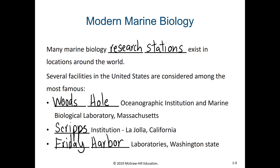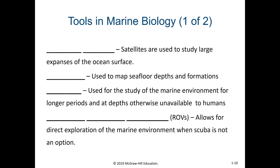Since observation is so important in science, this is one of the more difficult aspects of marine biology — as humans, we are not able to directly observe most marine environments. There have been improvements in technology that have increased observation over time, but it remains one of the primary difficulties of marine science. Some of the ways we make observations include remote sensing — satellites used to study large expanses of the ocean surface, measuring color, temperature, or even the height of the ocean surface to gather information about marine environments.